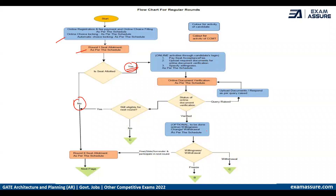What is this willingness or withdrawal? There are three options given to each candidate: they may either freeze the seat — that is, accept the seat they have got — or they may withdraw from the entire CCMT process, or the third option is to float, slide, or surrender the seat and participate in the next round.